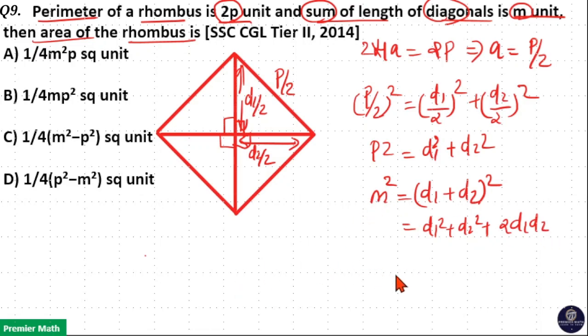Here we need to find out the area of rhombus. Area of rhombus is equal to half into d1d2. Here d1d2, from this m square is equal to - here d1 square plus d2 square is equal to p square. Which means d1d2 is m square minus p square by 2.